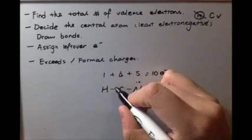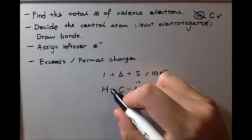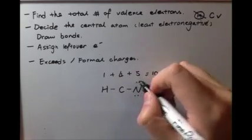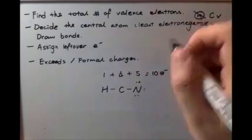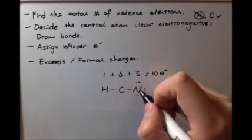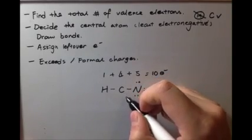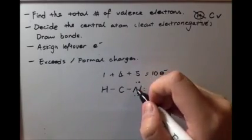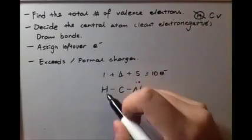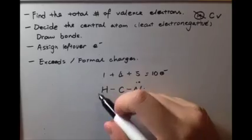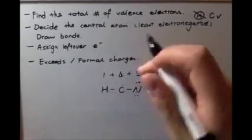We fulfill the octet rule for nitrogen, and counting up we reach ten electrons total — it's already ten, but carbon is not fulfilling the octet rule. This is fine because tiny hydrogen only holds two.